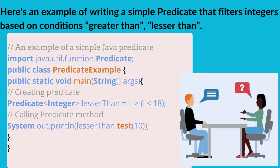Here is an example of writing a simple predicate that filters integers based on conditions such as greater than or less than.